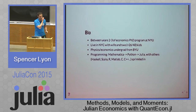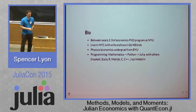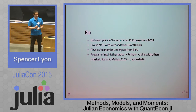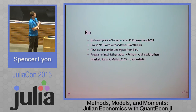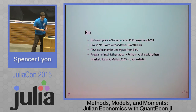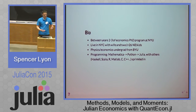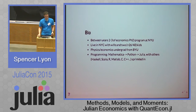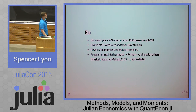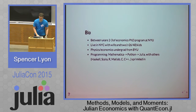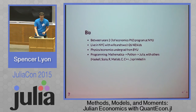A little about myself: I'm between my second and third year of my PhD program in the economics department at NYU. I live in New York with my wife and two kids, and we're expecting our third in September. I have a physics and economics undergrad background from BYU. My programming background started with Mathematica, then I used Python for a few years, and now I use Julia most of the time, though I sprinkle in other things when applicable to the problem.